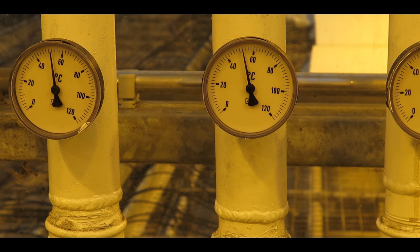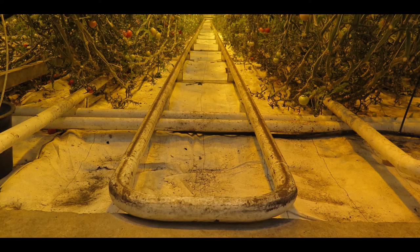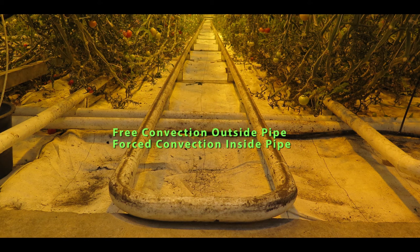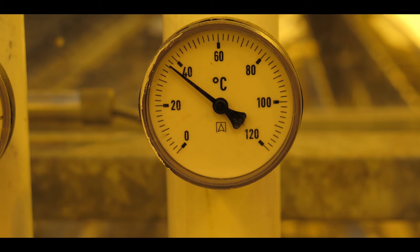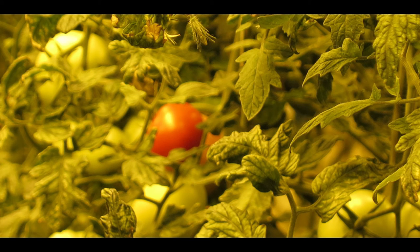The water comes in at about 52 degrees C. They then circulate it through these pipes on the bottom of the greenhouse for natural convection as well as providing the circulation mechanism. And then the water drops down to about 36 degrees C and they grow tomatoes with it. Really neat application of the geothermal heat.